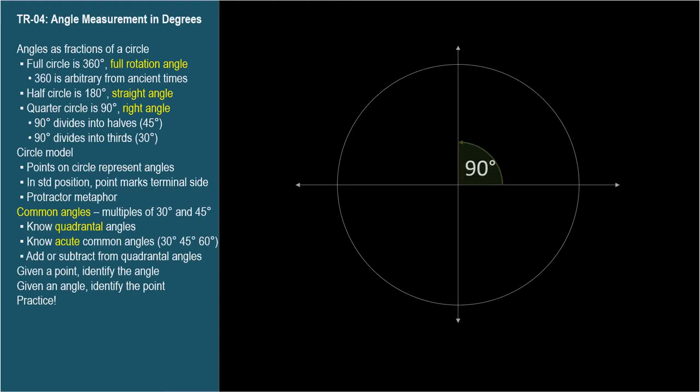A 90 degree angle can, in turn, be divided evenly into two halves of 45 degrees and thirds of 30 degrees. We'll refer to 30 and 45 degree angles and their multiples a lot.